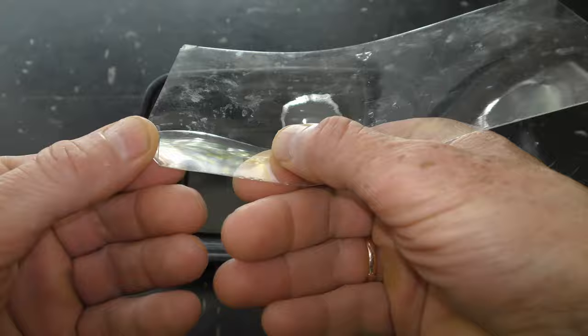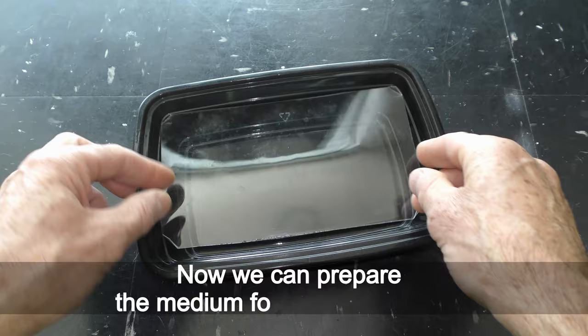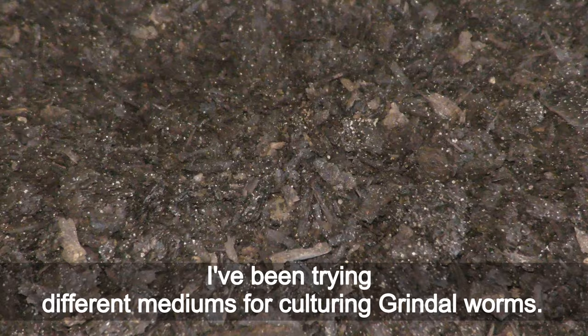Cut a piece of plastic to fit inside the box. Bend the corners or sides of the plastic. It would make moving the plastic sheet easier in and out of the box. Now we can prepare the medium for worms to live on.